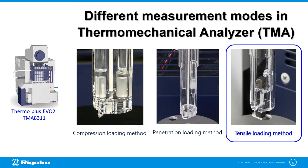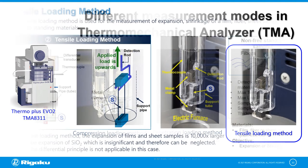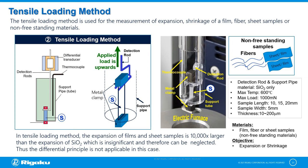The next measurement mode is the tensile loading method, used for the measurement of expansion and shrinkage of a film, fiber, or sheet sample. The detection rod and support pipe are made of quartz, allowing measurements from room temperature up to 600 degrees centigrade, with a sample length of 10 mm, 15 mm, and 20 mm, a sample width of 5 mm, and a thickness of 10 to 200 micrometers. The maximum load that can be applied is 1000 mN.